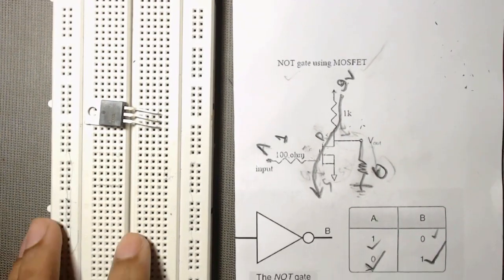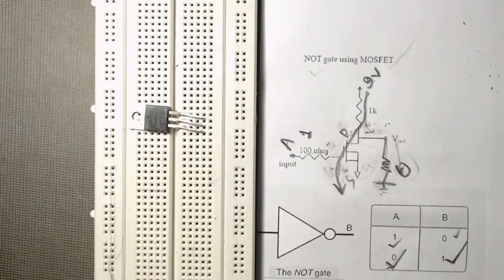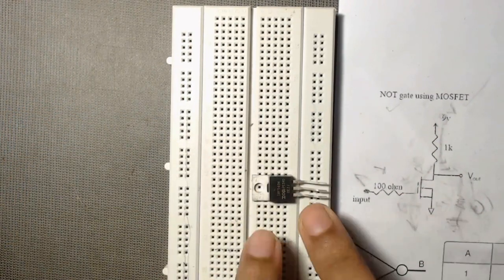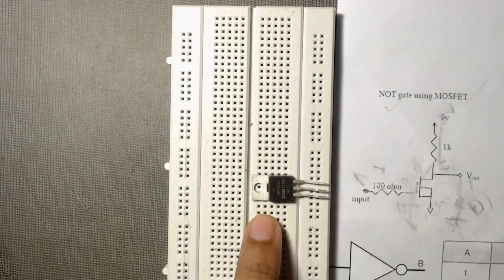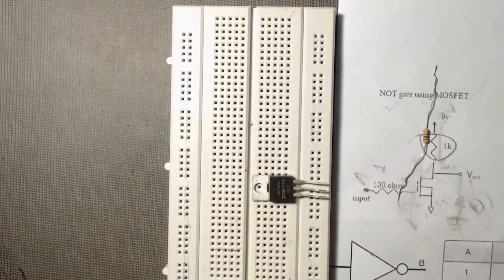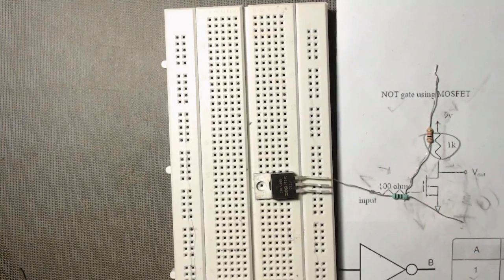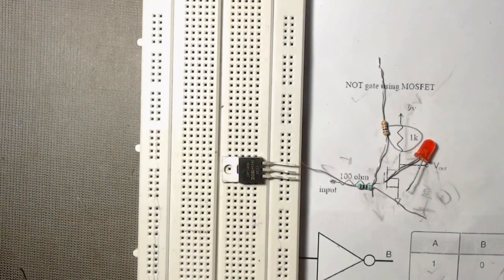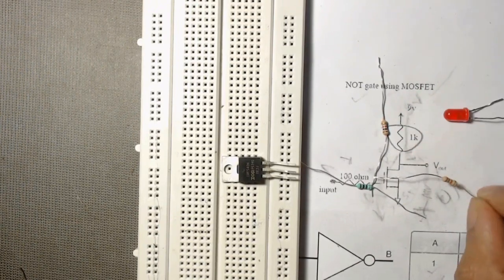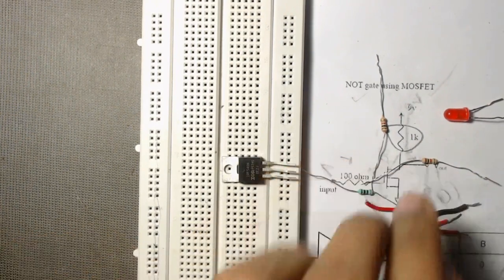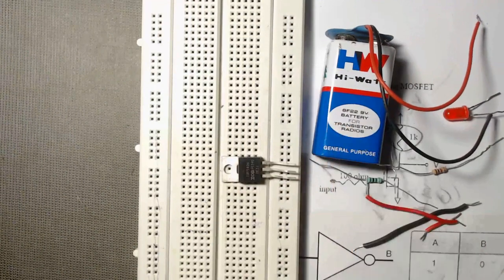Now we will implement it on the breadboard. To make this project we need an N-channel MOSFET — here we are using IRF540N — and we need a 1k resistor and a 100 ohm resistor. To observe the output we need an LED, here we are using a 5mm LED, and to protect the LED we need another 1k resistor, some connecting wires, a 9-volt battery, and a breadboard.